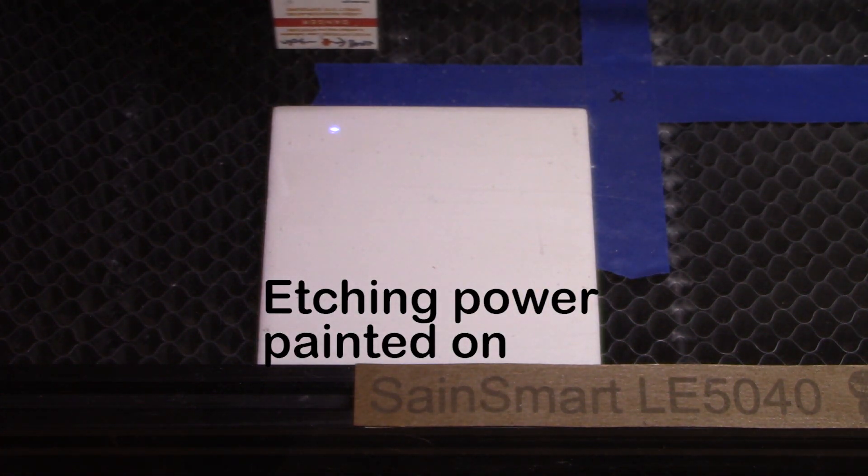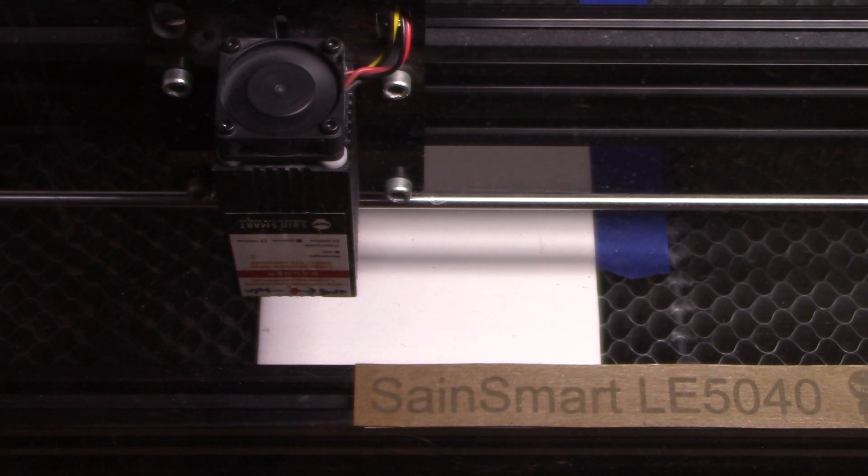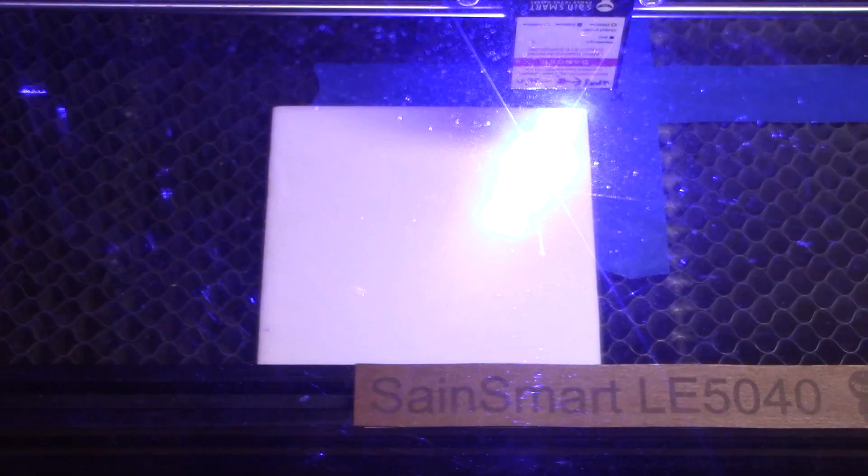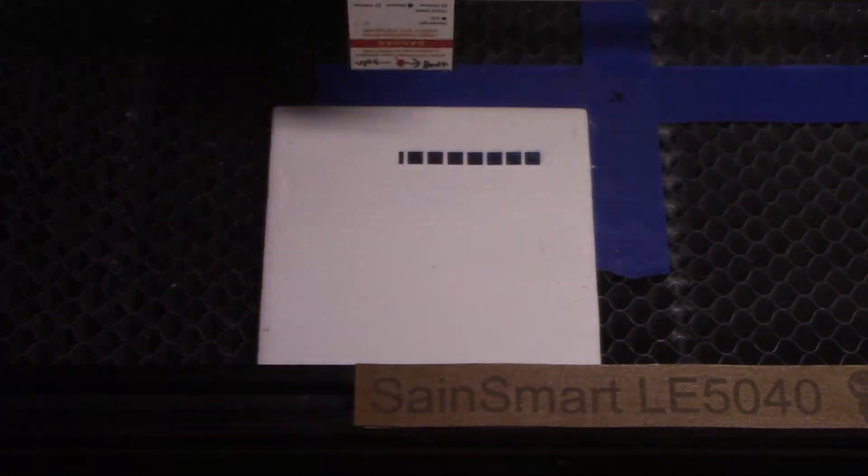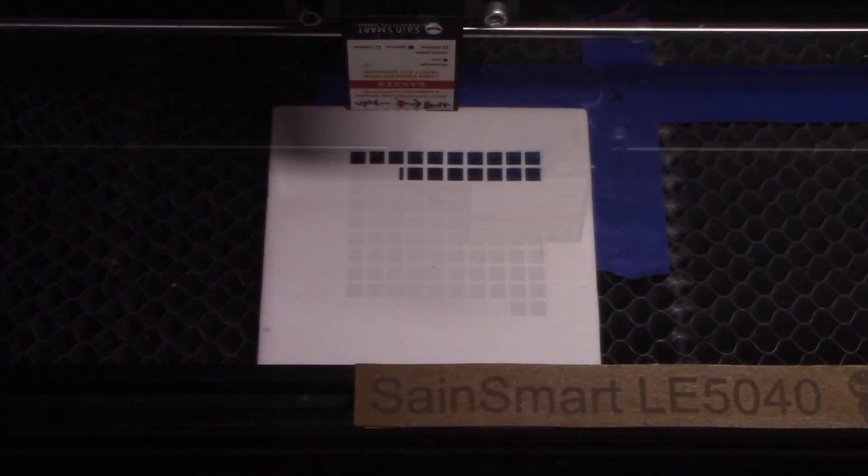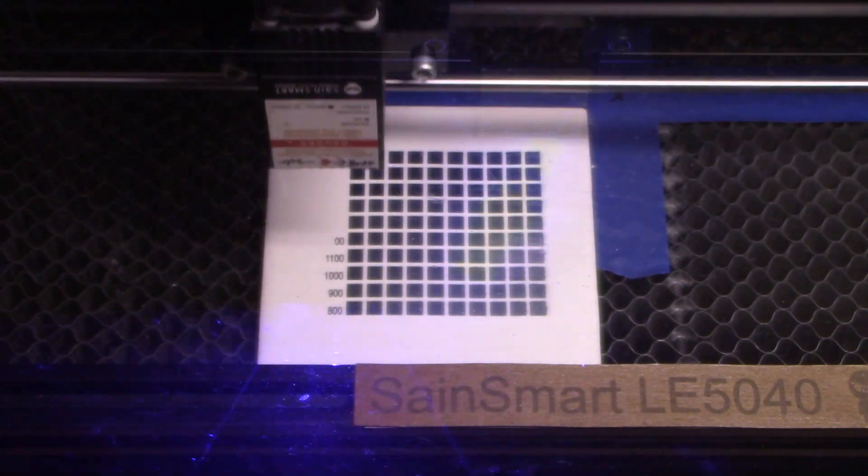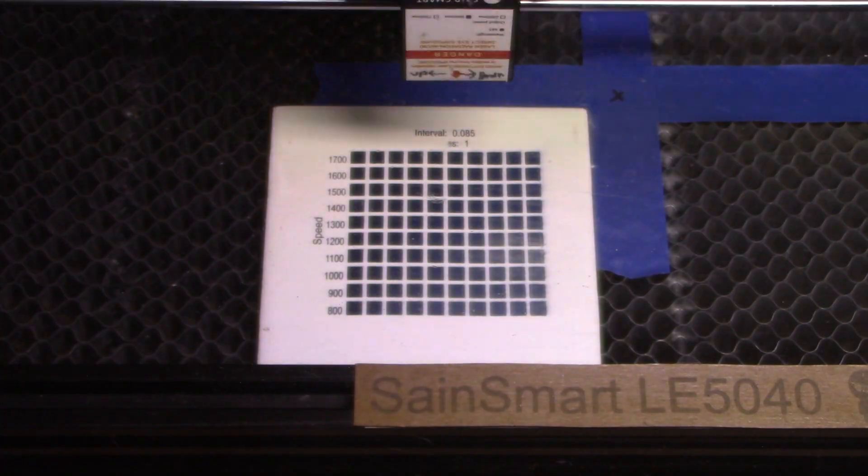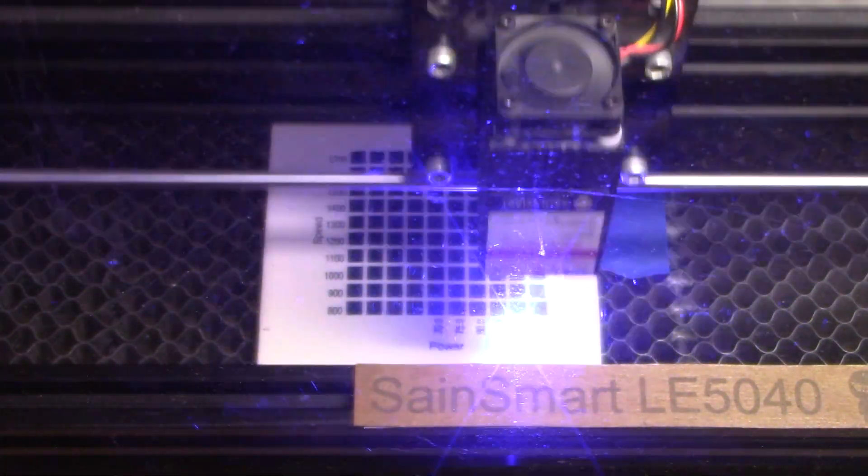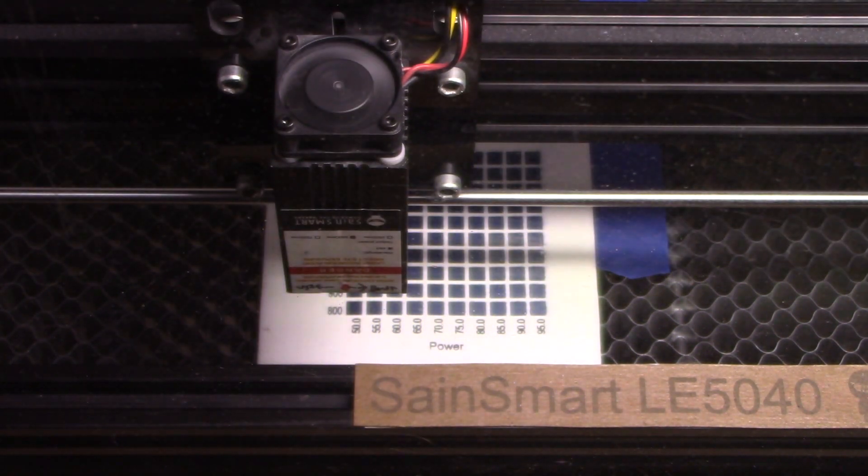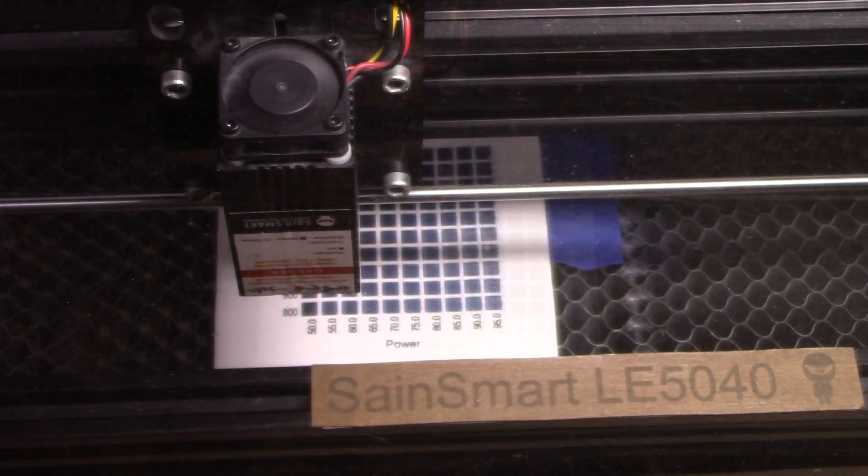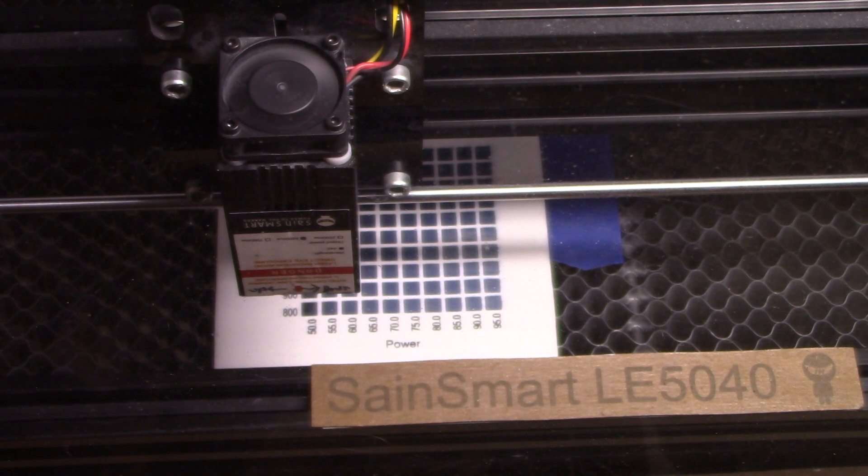This tile is using the metal etching powder and I have no clue how this is going to turn out. It certainly looks good before cleaning. Let's take the tile out of the laser and go rinse it off.